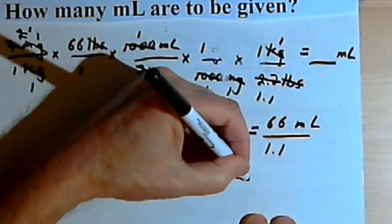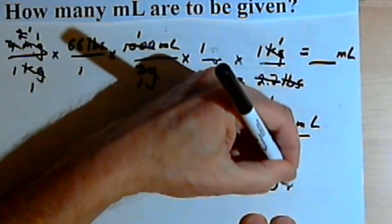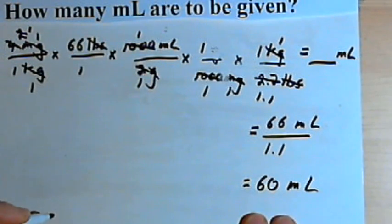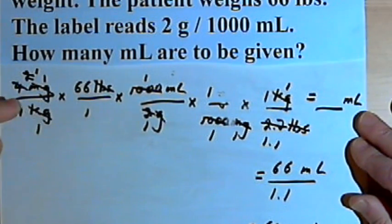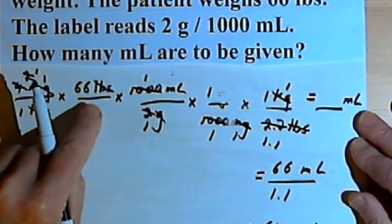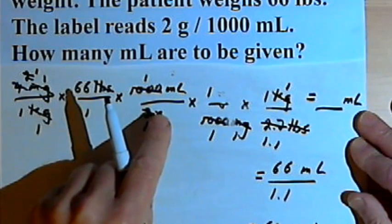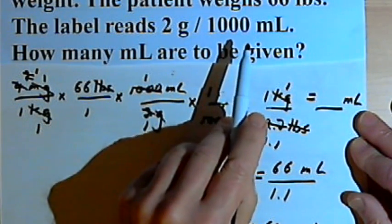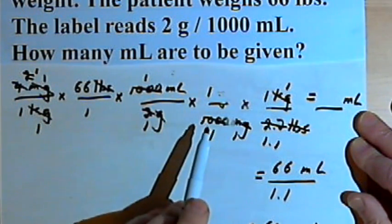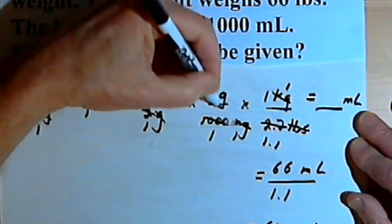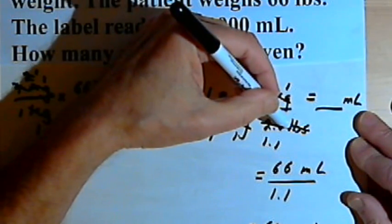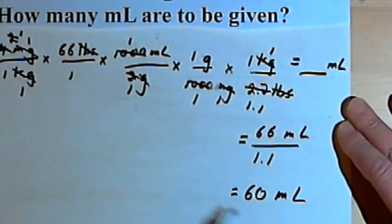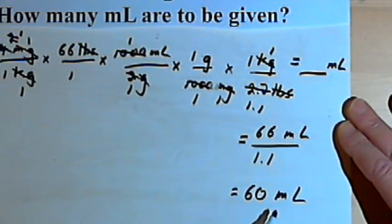Simplifying 66 over 1.1 gives 60 ml. So for as complicated as this seemed, it was just a series of little steps. We wrote down the order, multiplied it by the patient's weight, multiplied it by a fraction from the on-hand information, and then did whatever conversions we needed — grams to milligrams, and kilograms to pounds. We cleaned up everything we could, and ended up with our answer: 60 ml.